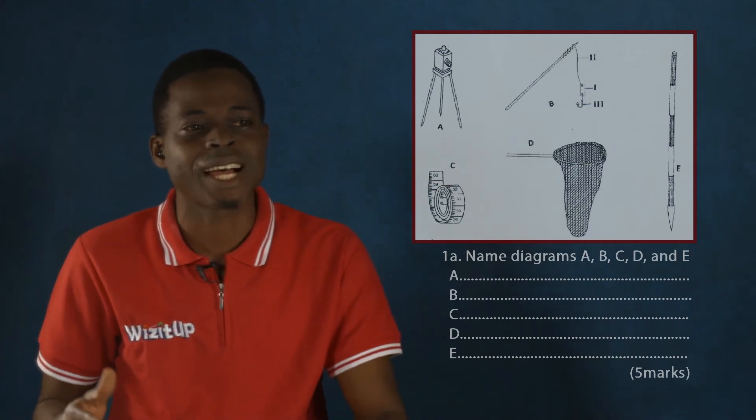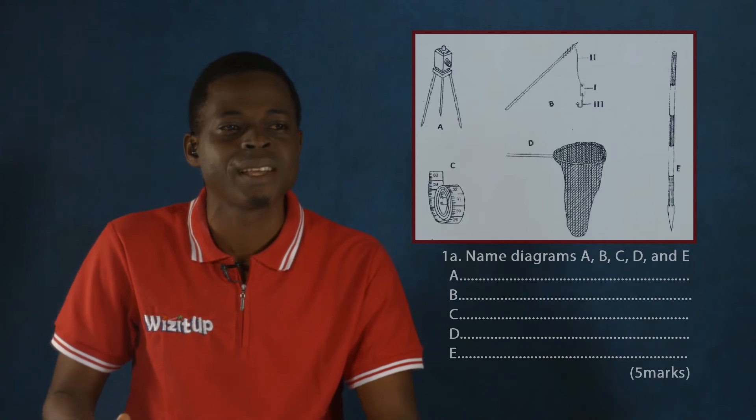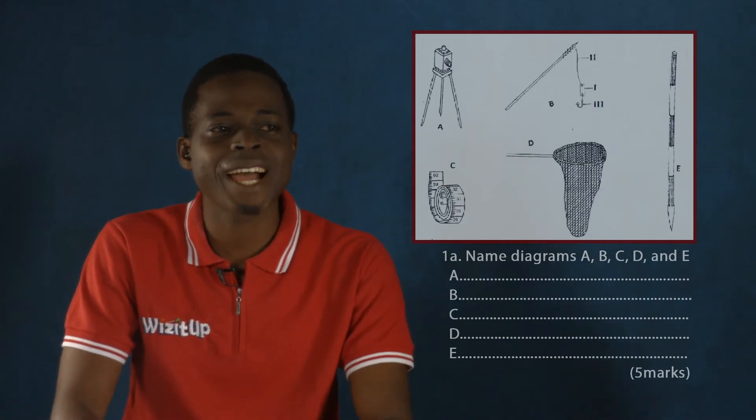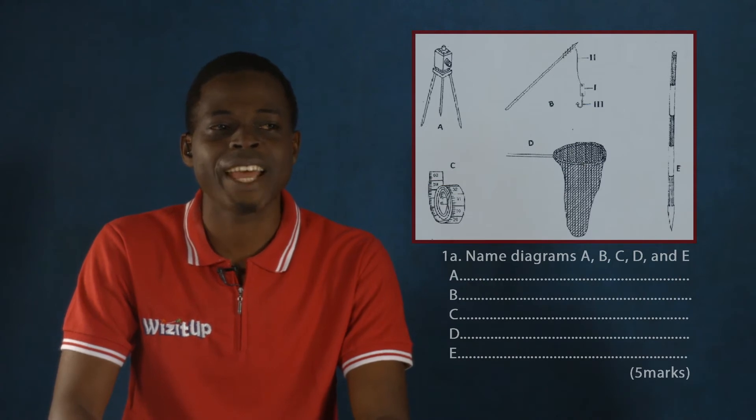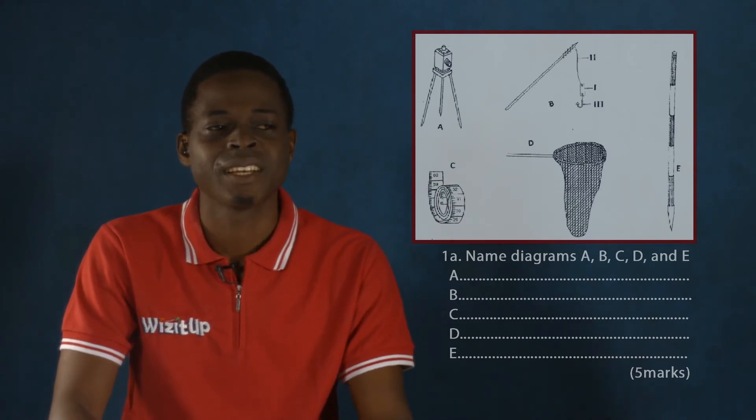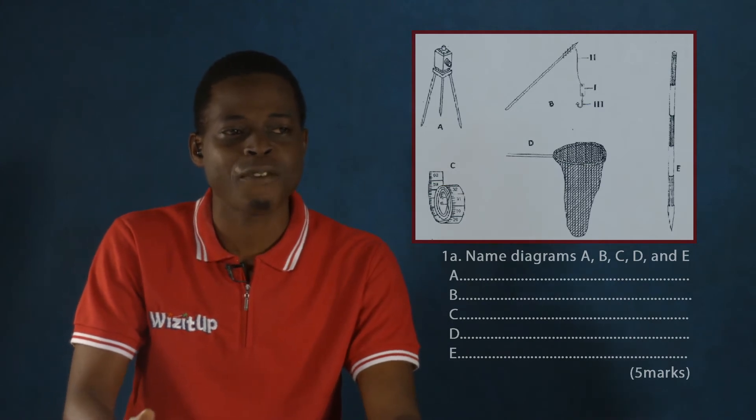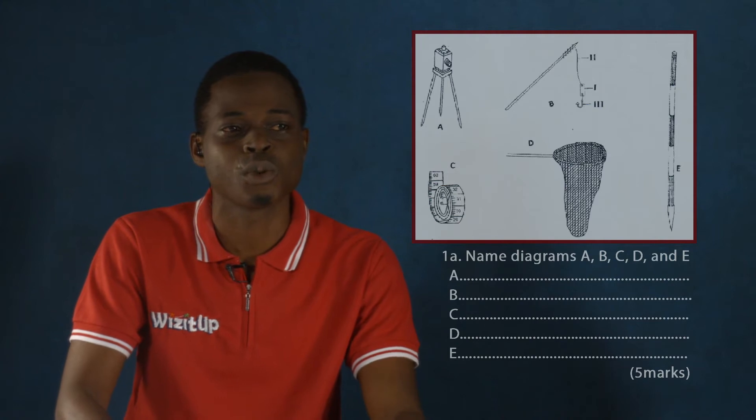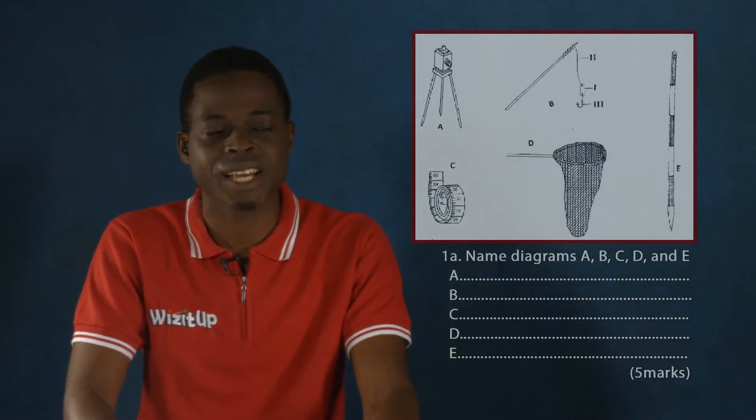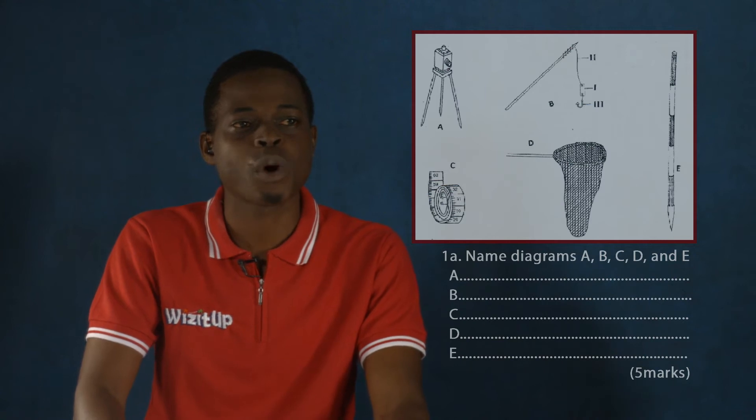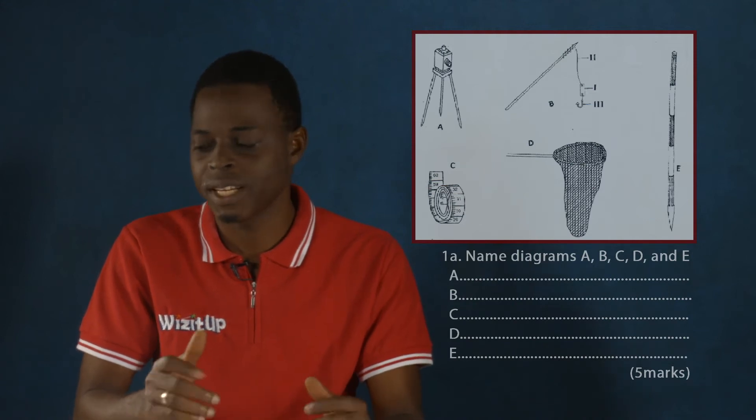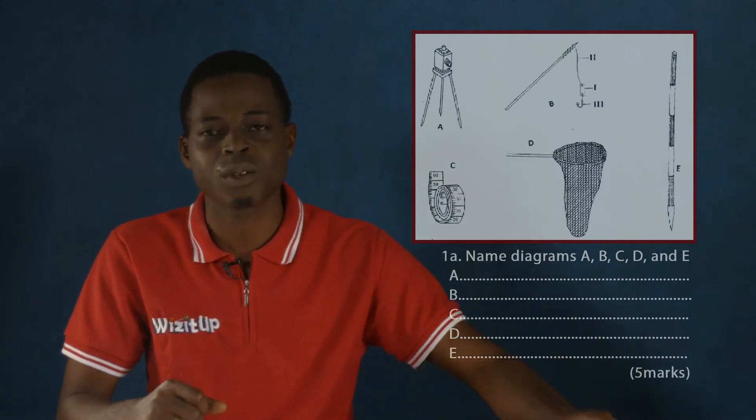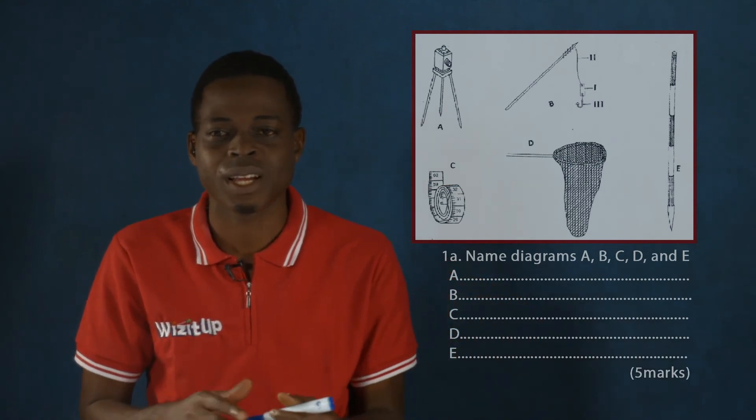And the question that we have as question number one states, Name diagrams A, B, C, D, and E. The total marks is five. That is, five marks is allotted to the question if you answer it appropriately. So if you want to answer such a question, you go to the spaces provided for filling the answers. And so let us try to answer the question adequately.